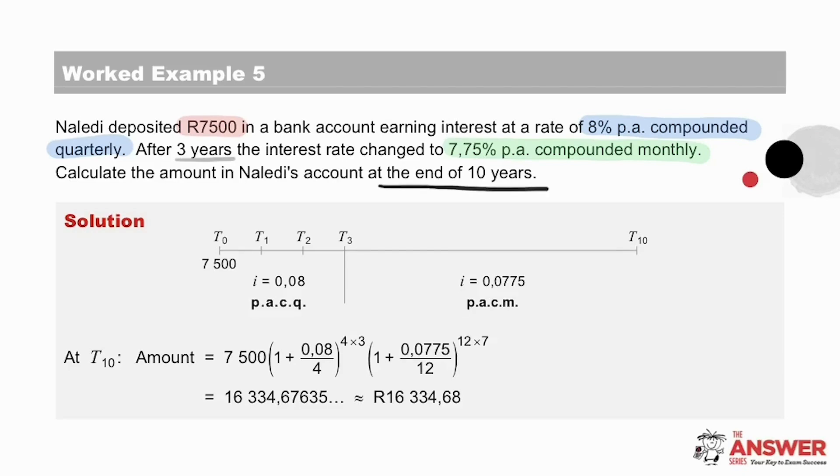The first thing to note on this timeline is that our time periods are years. Then the initial deposit gets filled in at T0. The interest rates are each entered in their time interval with a clear vertical line at T3, indicating where the interest rate changes. This stands for per annum, compounded quarterly, and this per annum, compounded monthly.